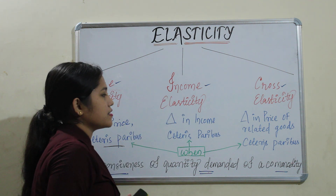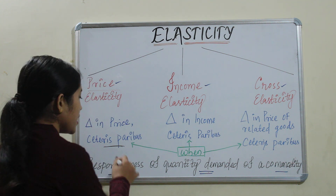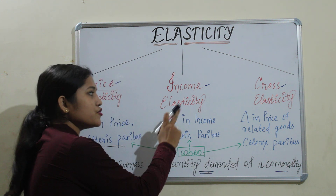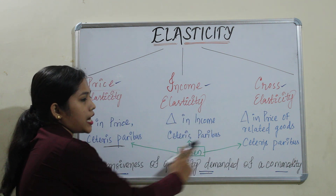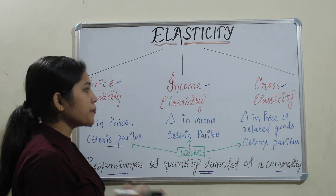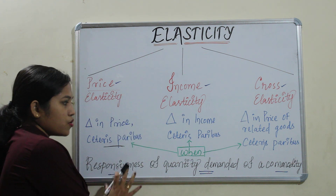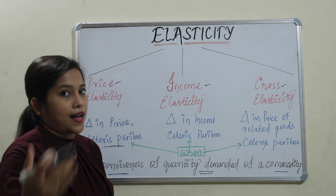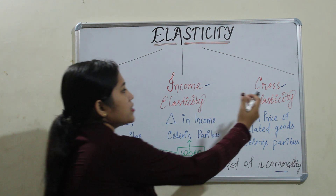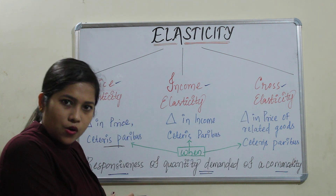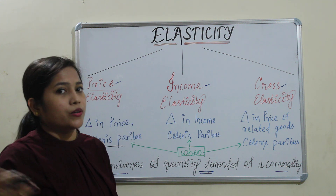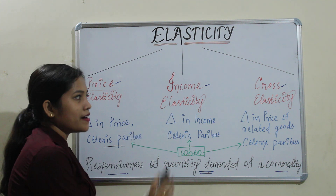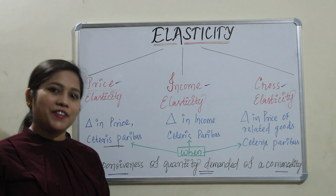Next is income elasticity. Same definition: responsiveness of quantity demanded of a commodity when there is a change in income, keeping other things constant. When only income changes, the response of the quantity demanded of a commodity is called income elasticity. And the last one — cross elasticity: keeping other things constant, if the price of a related commodity changes, then the response of demand is called cross elasticity of demand.